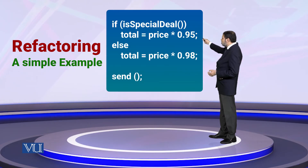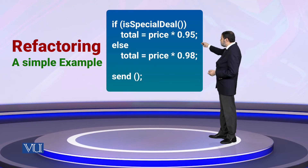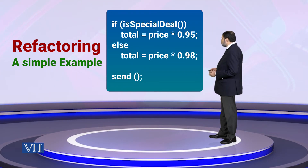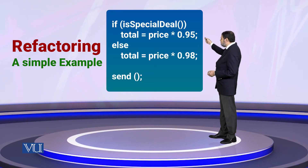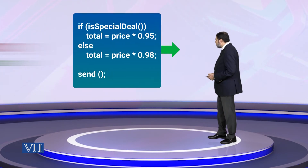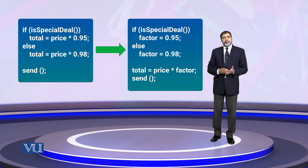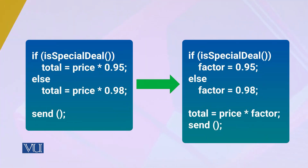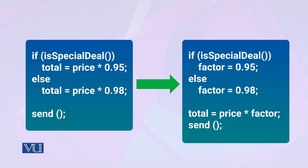One important thing to notice is that the only thing that changes between the two branches is the factor. In the main clause it is 95%, and in the else part it is 98%, multiplied by the price. So the formula is: total multiplied by a factor — and that factor is the only thing that changes. We remove the duplicated formula and keep just the factor variable.